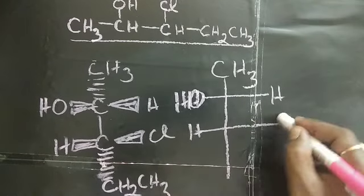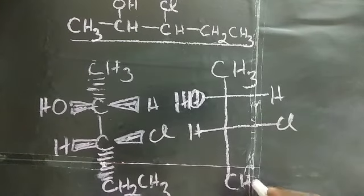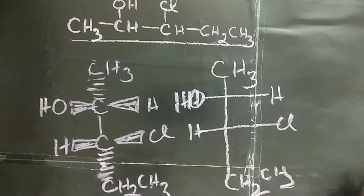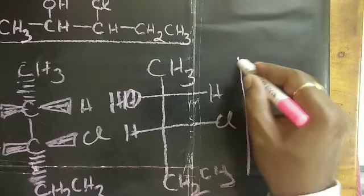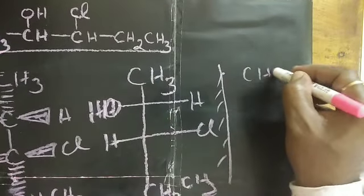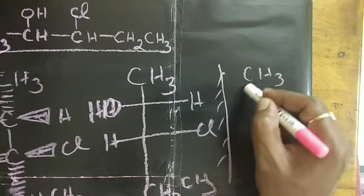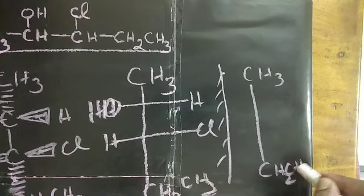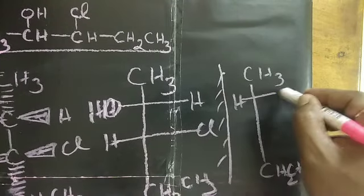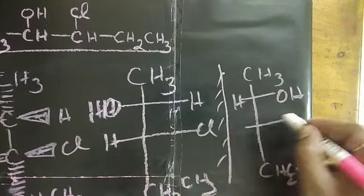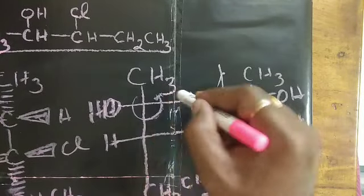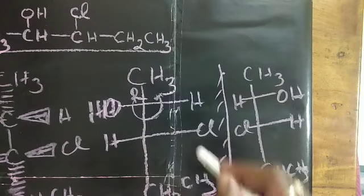So now this molecule, the enantiomer will be CH3, CH2-CH3, then H-OH, Cl-H. So what is this configuration? This is S, but it is R configuration, and this is rotating like this. It is anti-clockwise. It is also R configuration.